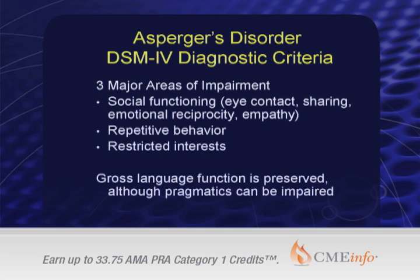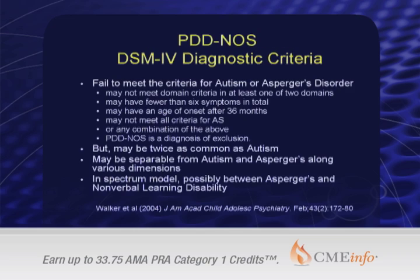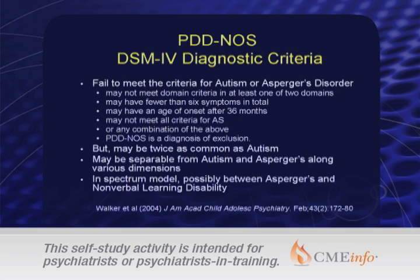So three major areas, as you can see. What happens here is that the language criteria basically drop out. The PDD-NOS criteria is basically a catch-all.